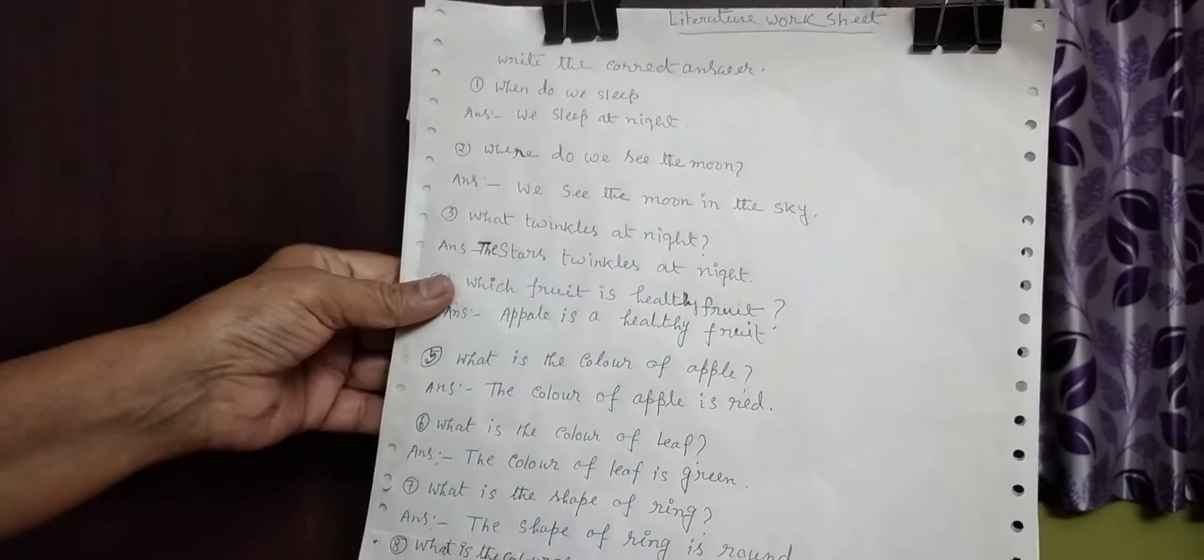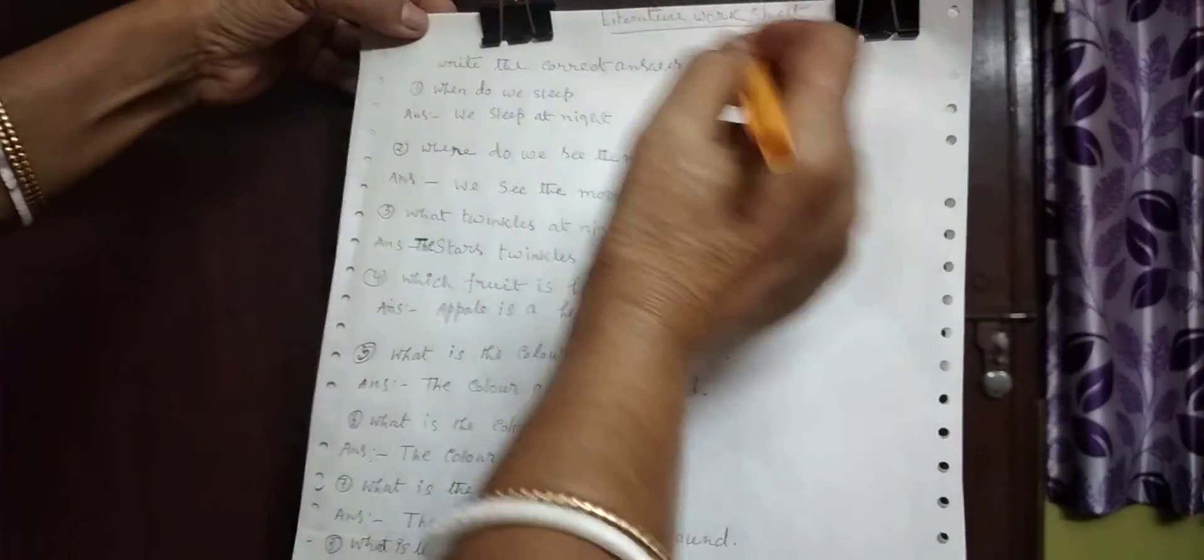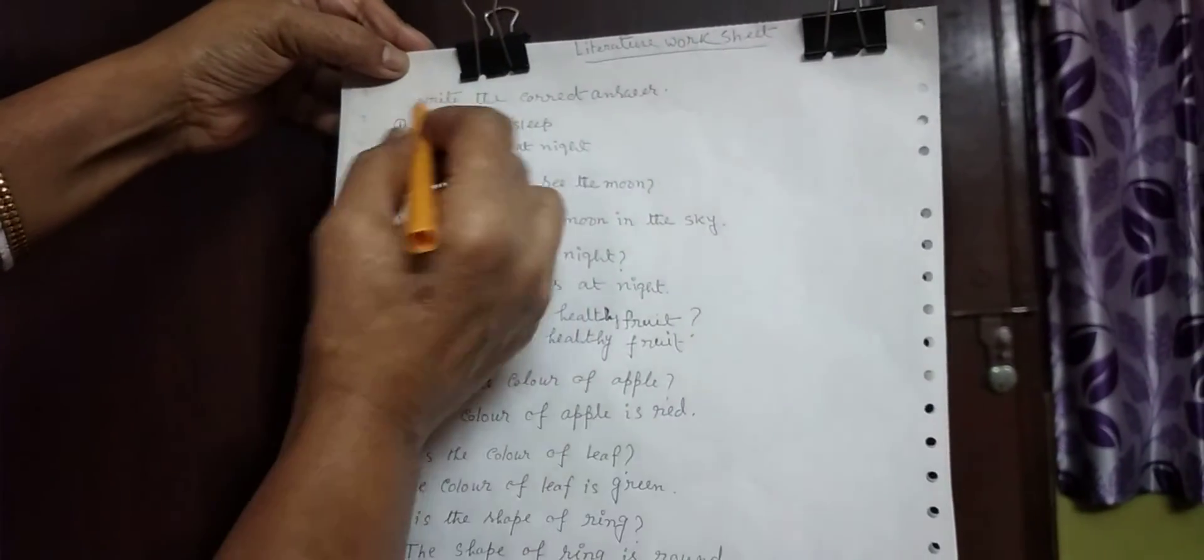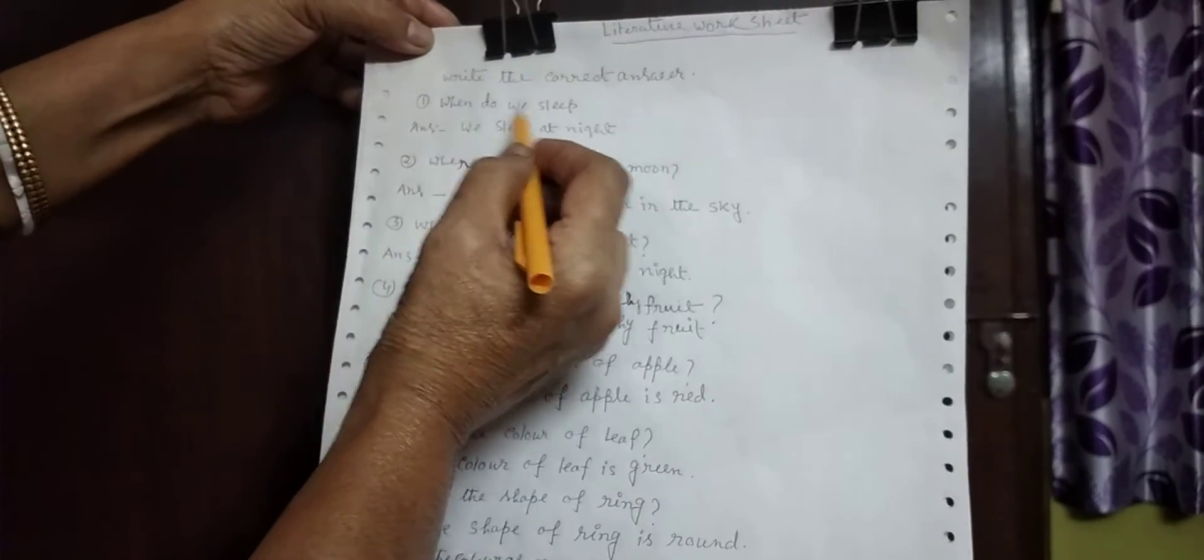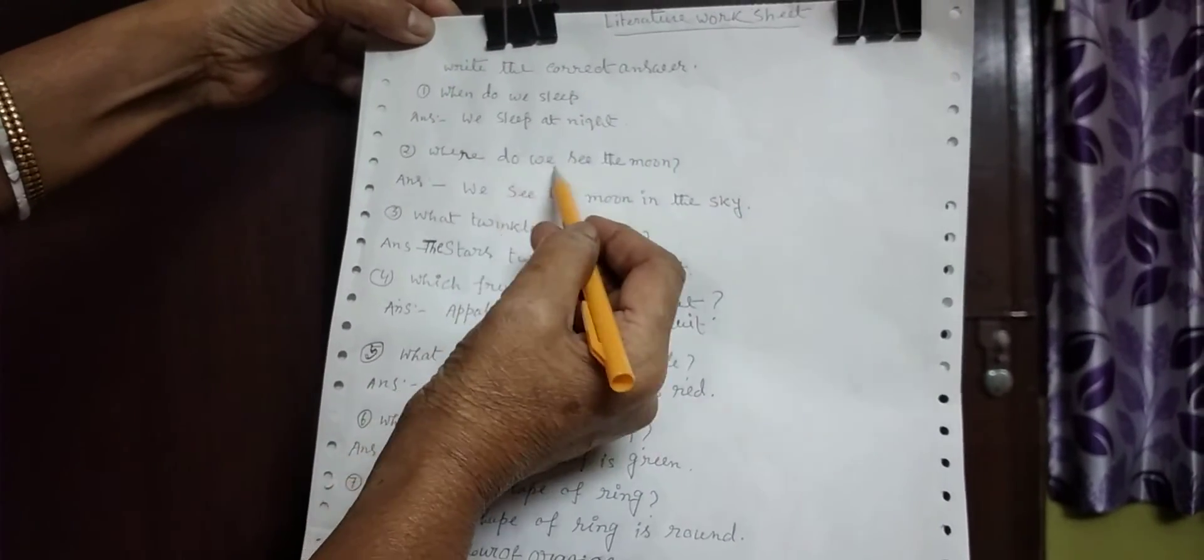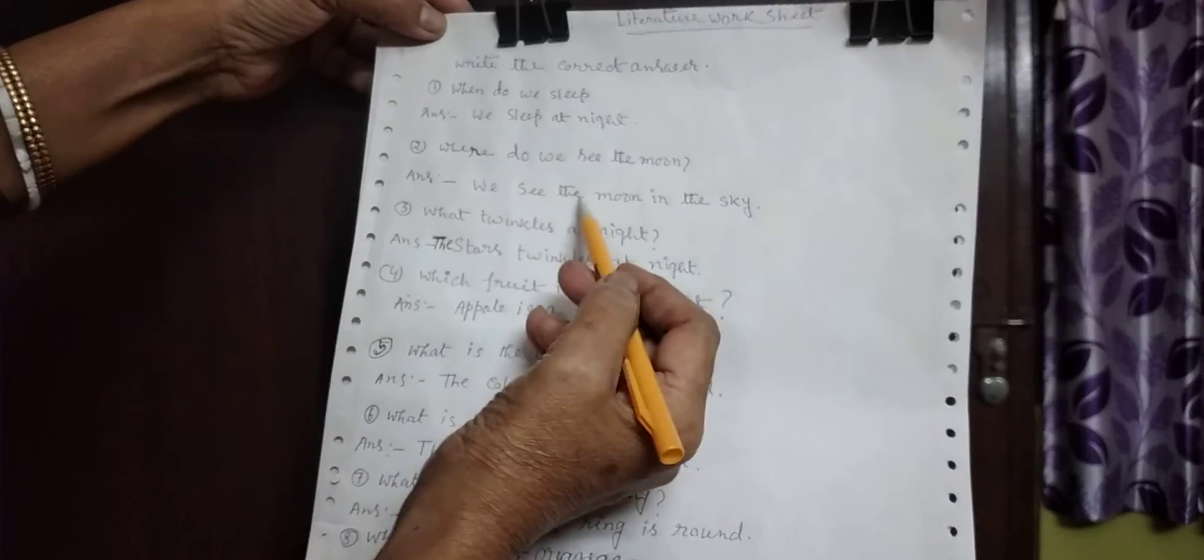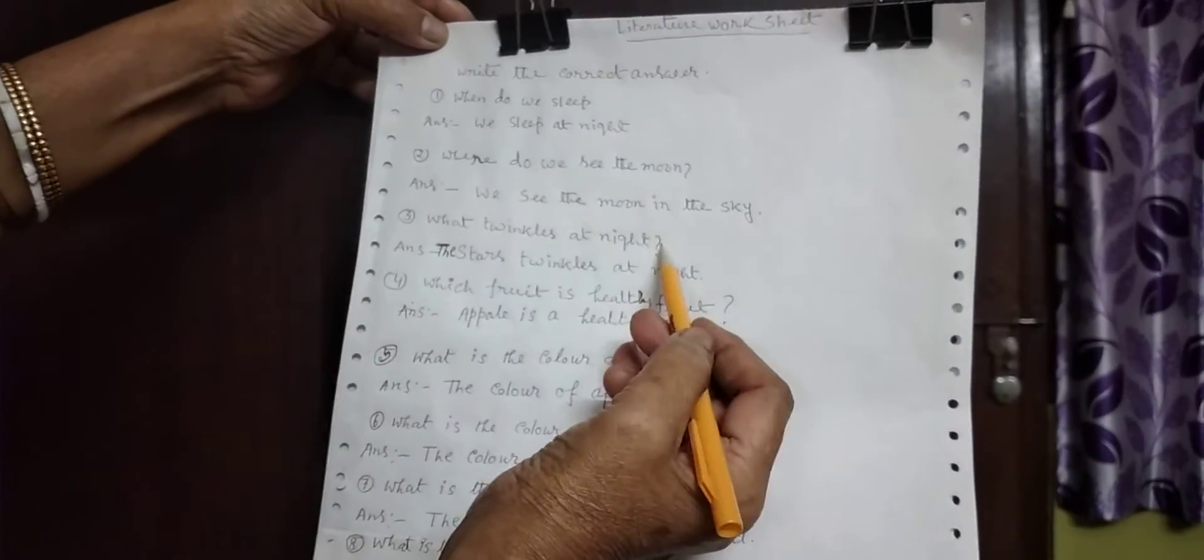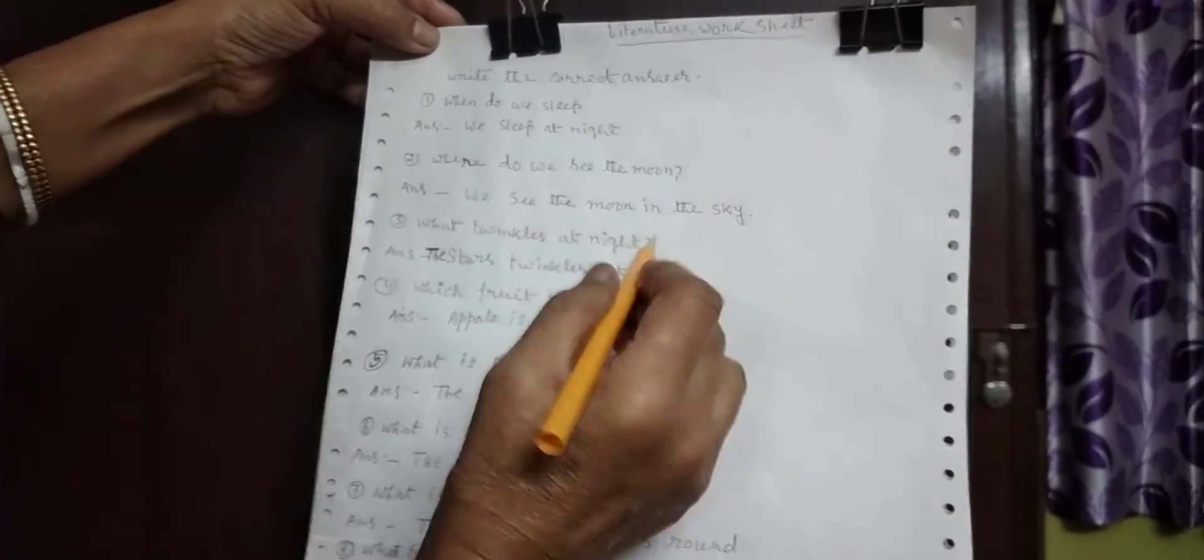Students, very carefully. It is learn at home. Literature worksheet. Look, here what was taught, a few questions from that. Write the correct answer. When do we sleep? We sleep at night. Where do we see the moon? We see the moon in the sky. What twinkles at night? What twinkles at night?